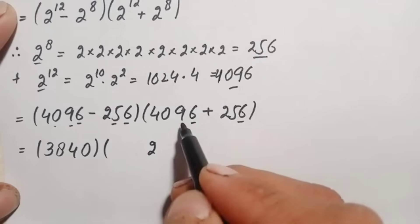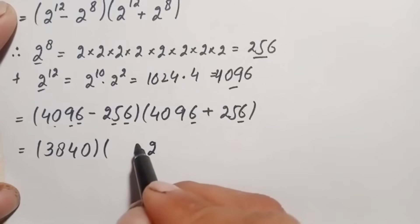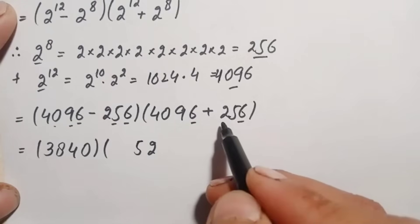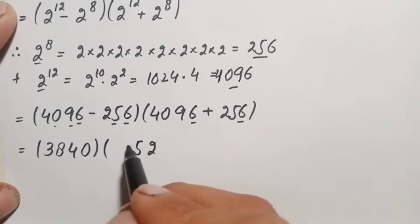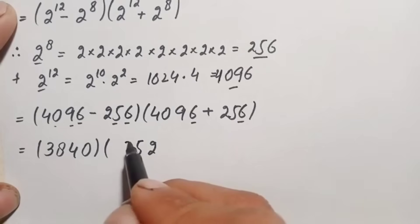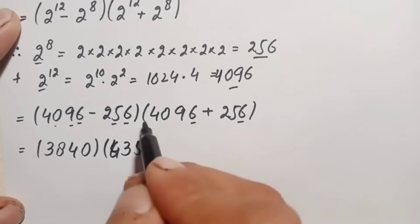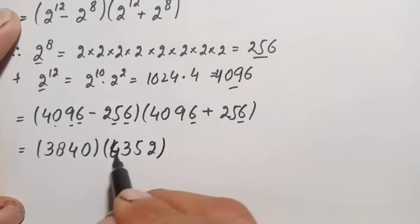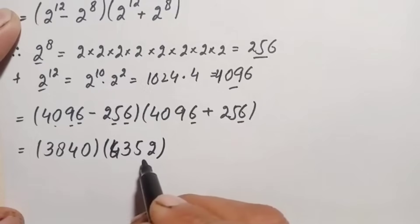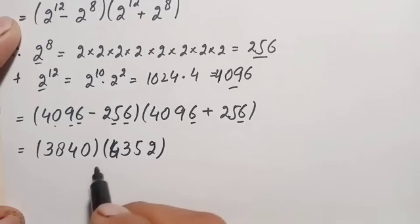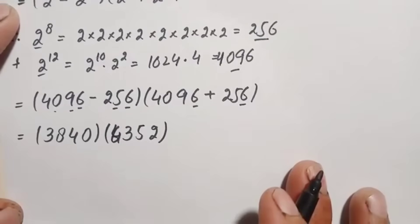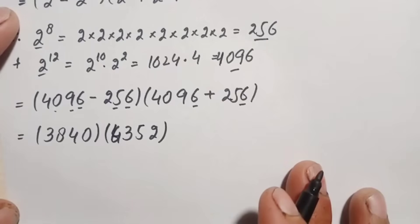Now adding: 6 plus 6 is 12, write 2 carry 1; 5 plus 9 is 14, plus 1 is 15, write 5 carry 1; 2 plus 0 is 2, plus 1 is 3; and 4. So 4096 plus 256 is 4352. Now we multiply 3840 times 4352.